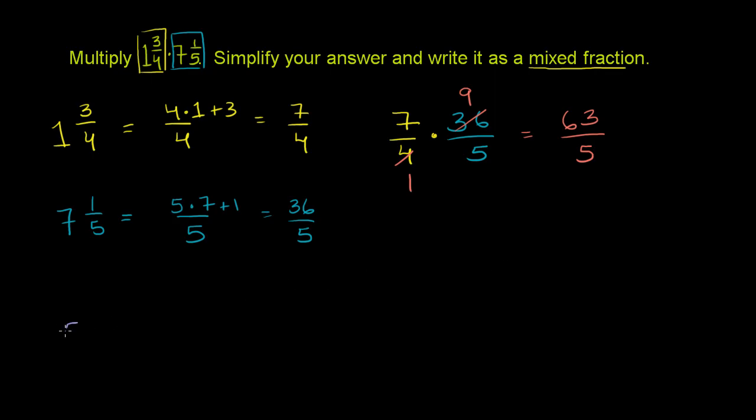We take 5 into 63. 5 goes into 6 one time. 1 times 5 is 5. You subtract. 6 minus 5 is 1. Bring down the 3. 5 goes into 13 two times. And you could have immediately said 5 goes into 63 12 times. But this way, at least to me, it's a little bit more obvious.